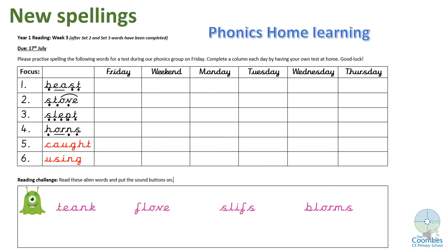And here are your new spellings for next week. The words are: 'beast' — B, E, A, S, T; 'stove' — S, T, O, V, E; 'select' — S, E, L, E, C, T; 'horns' — H, O, R, N, S. And your two red words are 'caught' and 'using.' Then you've got your reading challenge at the bottom, seeing if you can sound out some alien words. Good luck with your new spellings.